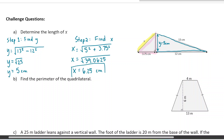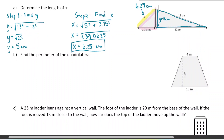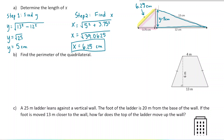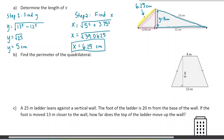I'll box that in because it's my final answer and label it on the diagram. Next question says: find the perimeter, which means all of the outside pieces of this quadrilateral added up together.